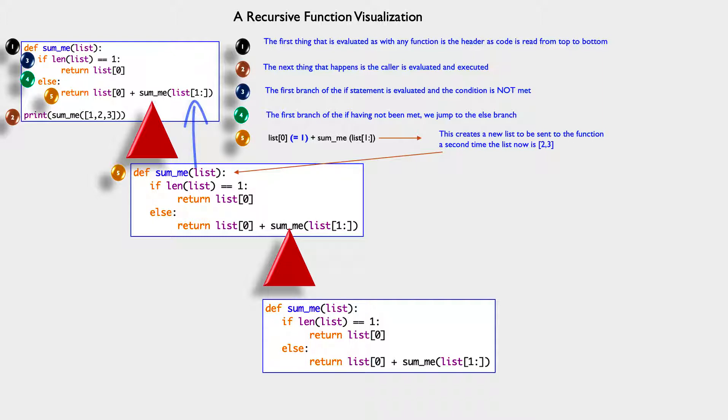Because that says take that second element of the list, zero-based indexing, right? The original list, one would be zero, two would be one, three would be two. So now we have the second and third element of the list. So it's two and three that's sent to the function for a second time.